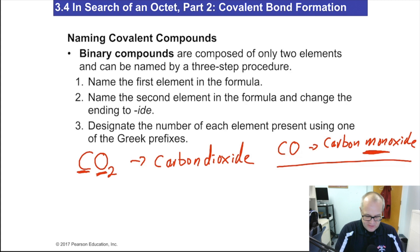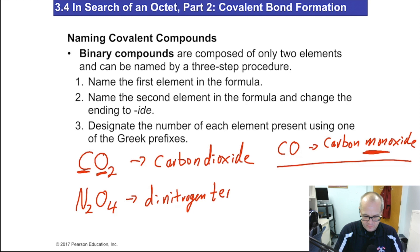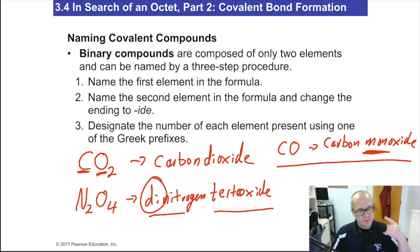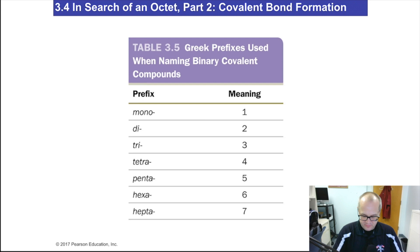For example, if I had N2O4: dinitrogen tetroxide. I had to give the first element the di because there was more than one.